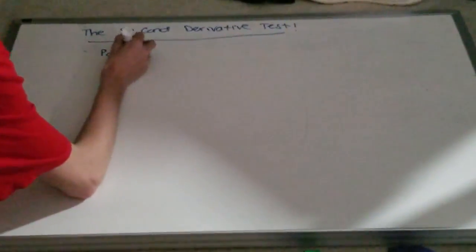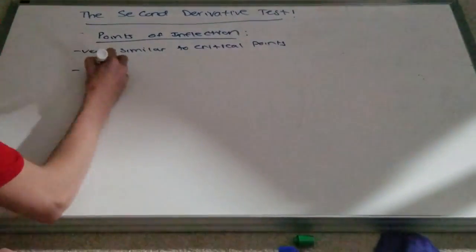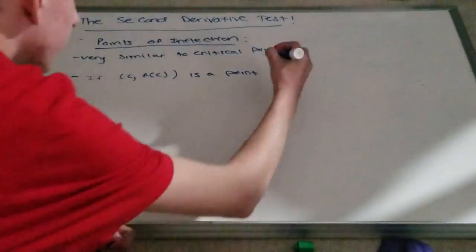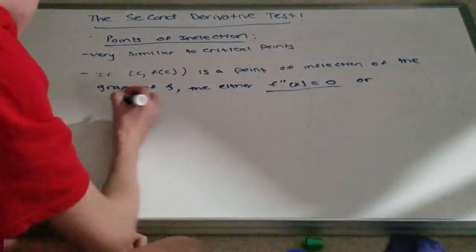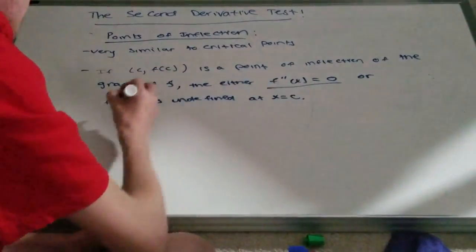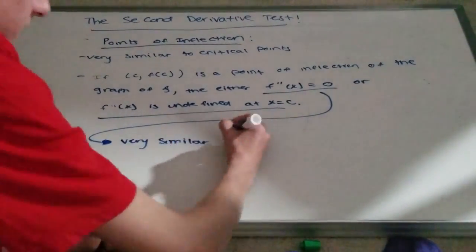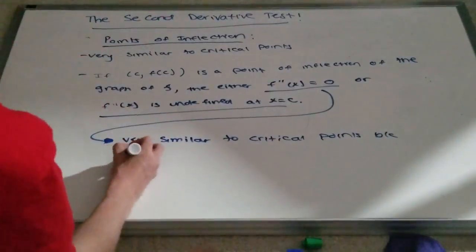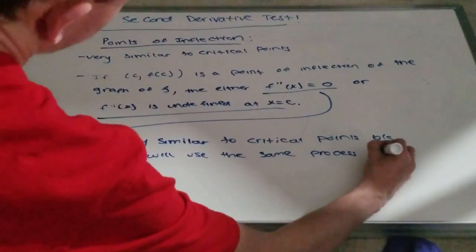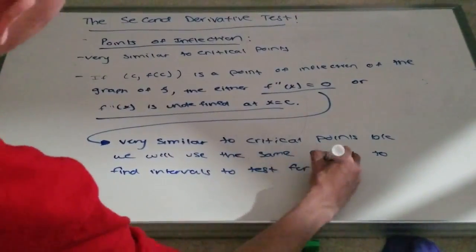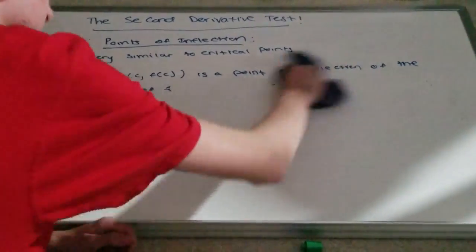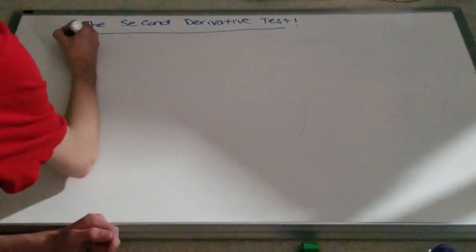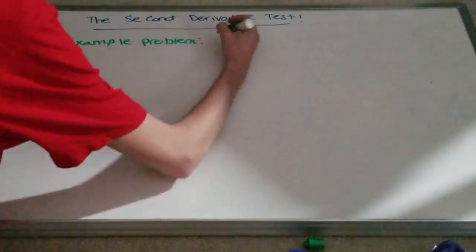One last thing to understand about the second derivative test is points of inflection. Points of inflection are very similar to critical points because they are the points where the second derivative equals zero. However, points of inflection can also mean the function is undefined at that point. They are also similar to critical points because we are going to use the same process to find intervals to test for concavity.